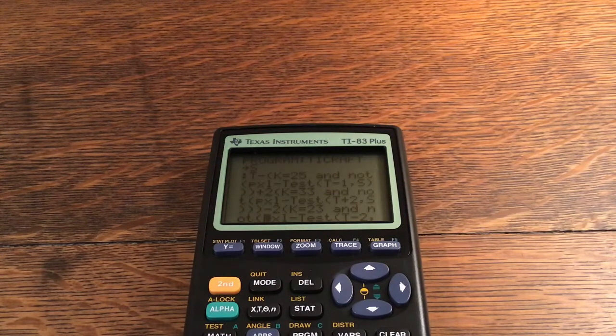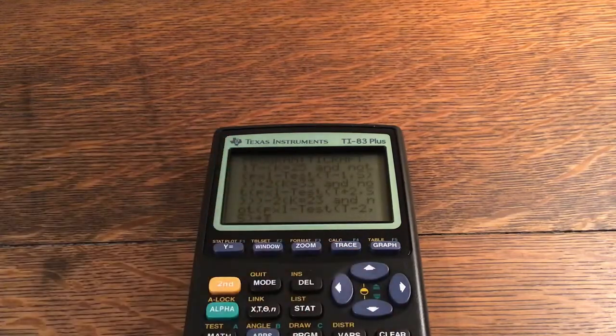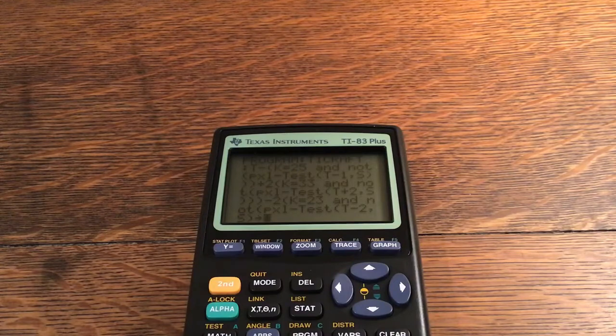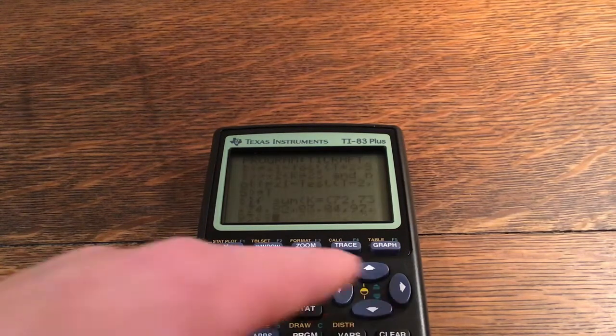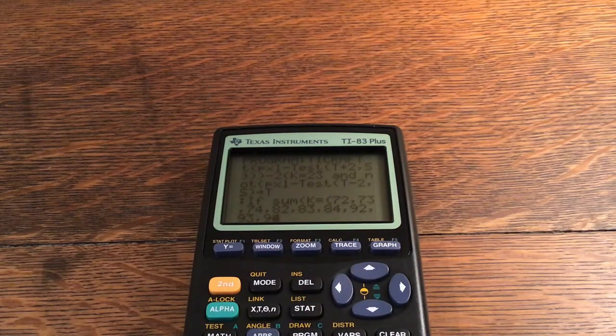T minus K is equal to 25 and not pixel test at T comma 1 comma S, two parentheses. Plus 2 multiplied by K is equal to 33 and not pixel test at T plus 2 comma S, three parentheses there. Minus 2 multiplied by K is equal to 23 and not pixel test at T minus 2 comma S store into T. You don't have to check down because there is a gravity feature.